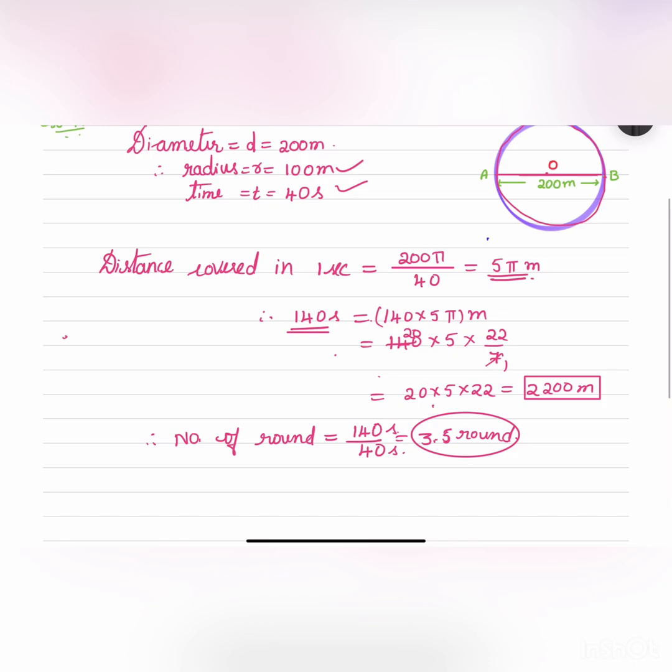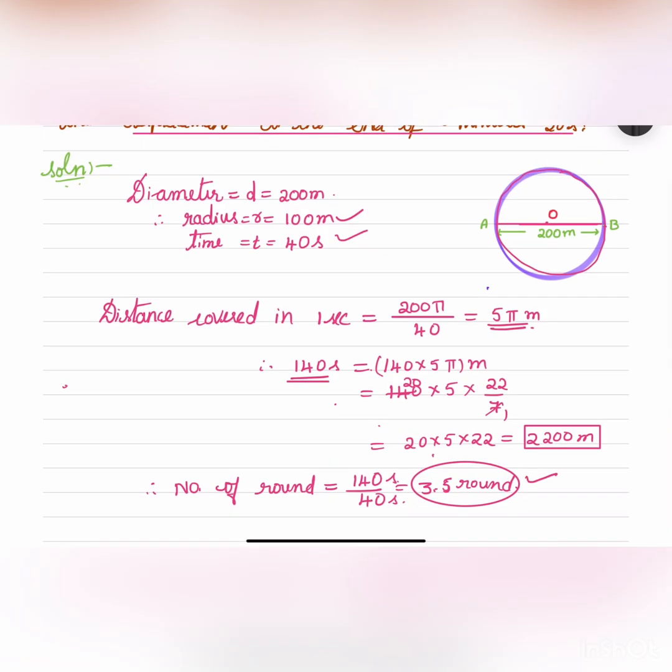Now from 3.5 rounds we can find out the displacement. So 3.5 rounds means let us consider athlete starts from A. So athlete will cover 1 round, then 2, then 3 and 3 and a half. So the athlete will be at B after 3 and a half. So 3.5 rounds means the displacement will be from the initial point to the final point, which is 200 meters.